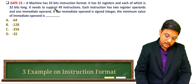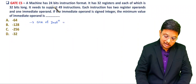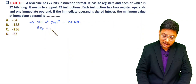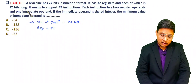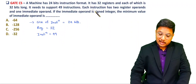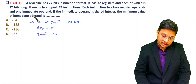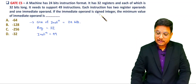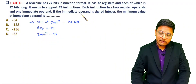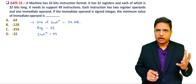Let us solve the third question. A machine has a 24-bit instruction format, 32 registers each of which is 32 bits long, and it needs to support 49 instructions. Each instruction has two register operands and one immediate operand. Remember, all instructions have an opcode by default — so even if it is not explicitly mentioned in the question, you must include an opcode field in the instruction format.